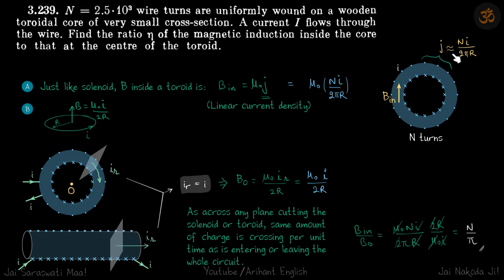Now this is an approximation because as you can clearly see here inside the toroid, the current density is more and outside it is less. But we are given the cross section is small, so we can assume it to be ni by 2πr. So r is the middle of it.